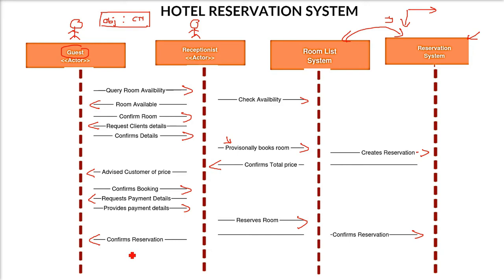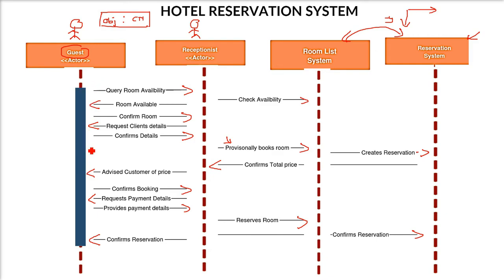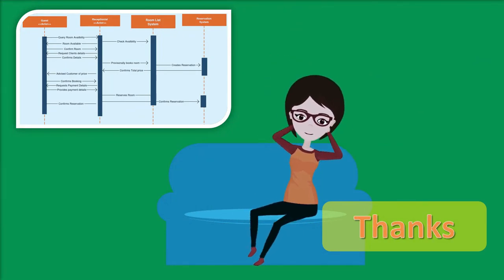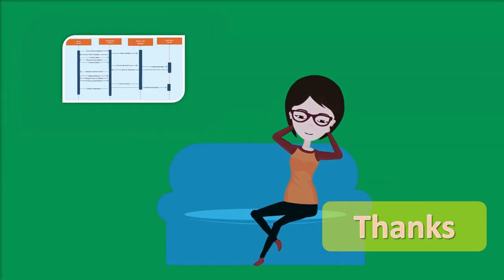This is a very basic sequence diagram — we have not covered different symbols or notations in detail. One final important thing is the activation bar on the lifeline: wherever an actor or system is active, a rectangle box is placed on the lifeline for that span. The guest, receptionist, room list system, and reservation system each have activation bars wherever they are active — the reservation system is active for a smaller span of time. That is the idea of the hotel reservation sequence diagram.